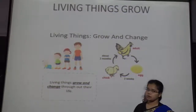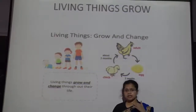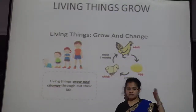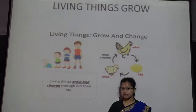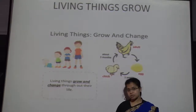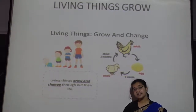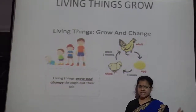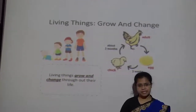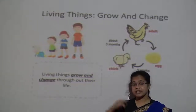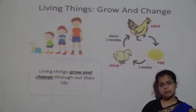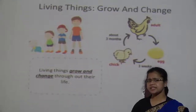Living things grow. If you look at your photograph when you were just one year old and compare it to now, you have grown. So living things grow. For example, seeds grow into a big tree. Animals, human beings, birds, and fish — all living things grow.